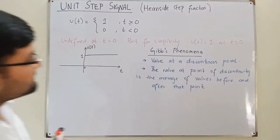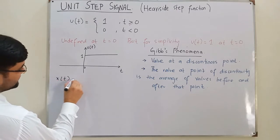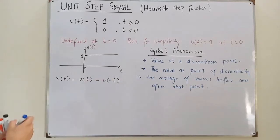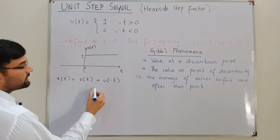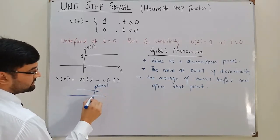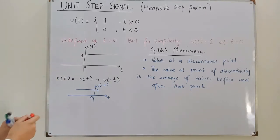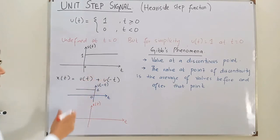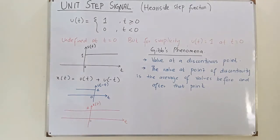Let's apply this with an example. Consider the function x(t) = u(t) + u(-t). If we draw u(t), it is 1 for t ≥ 0. And u(-t), the time-reversed version, is the mirror image over the y-axis — it is 1 for t ≤ 0. Adding them together, x(t) equals 1 for both t greater than 0 and t less than 0.